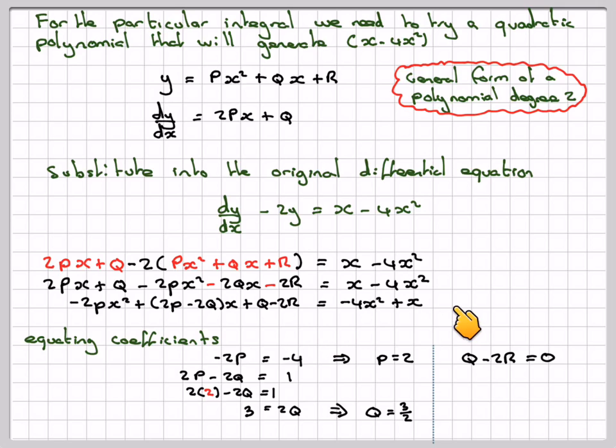And the constant term, there is no constant term here, so q minus 2r must be equal to zero. This is 3/2 minus 2r is equal to zero. 2r is equal to 3 over 2. r will be equal to 3 over 4.